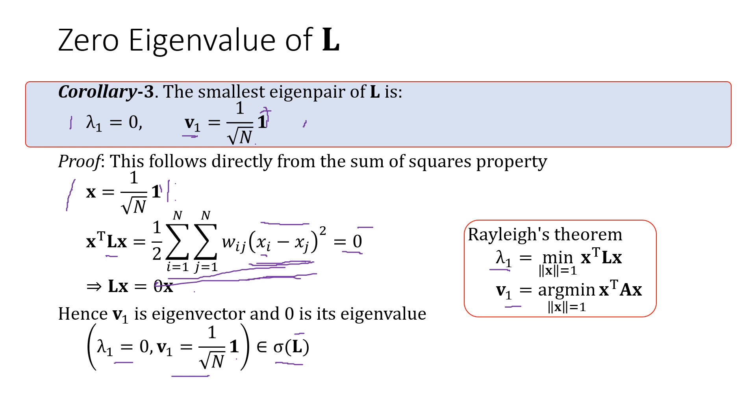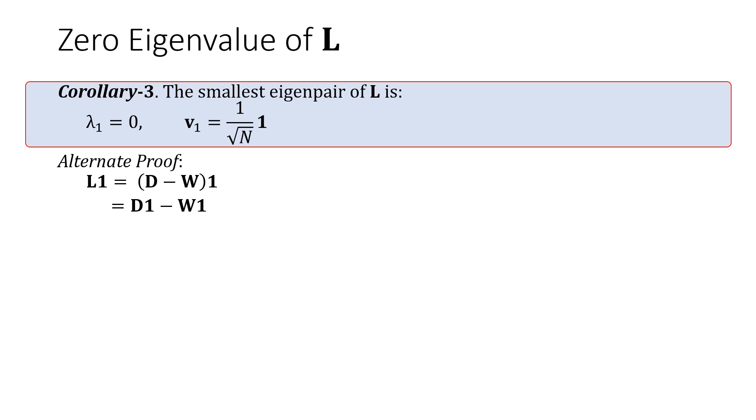There's an even shorter proof here. So here what I do is I take L1 equals, since L equals D minus W, I get this step and I open up the parenthesis. And then instead of writing D, I take each row i.